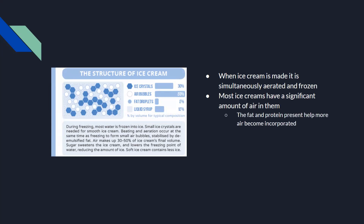You need the fat and protein components present in order to incorporate more air. That's why something like a sorbet, which lacks dairy, doesn't have fat and protein in it — so you're not able to add as much air, which is why it has that slightly icier texture.